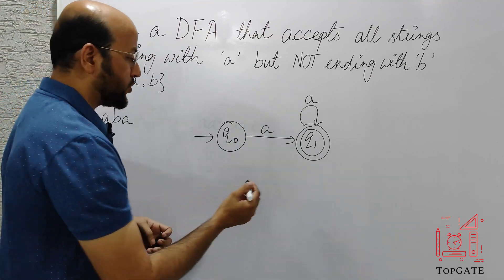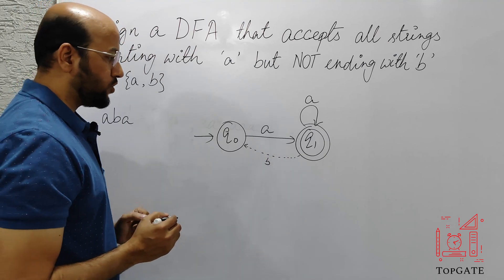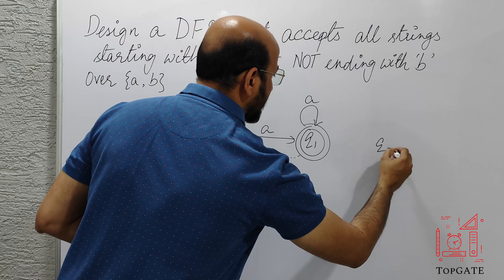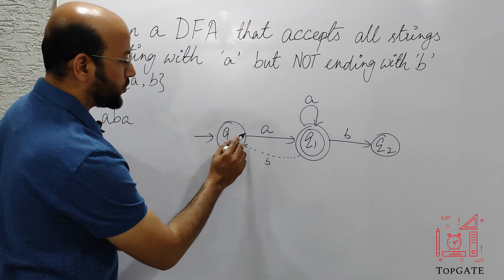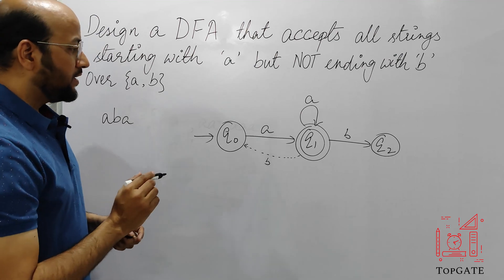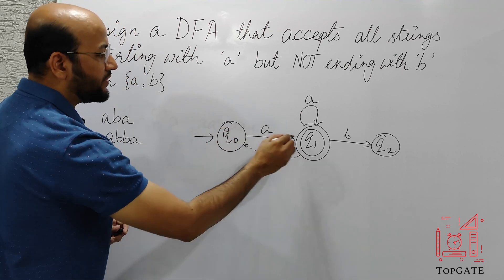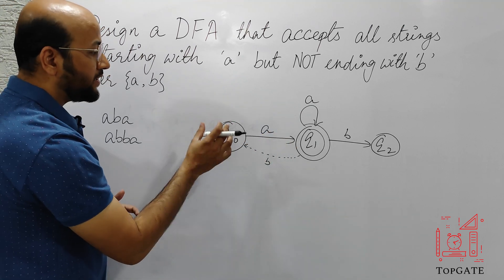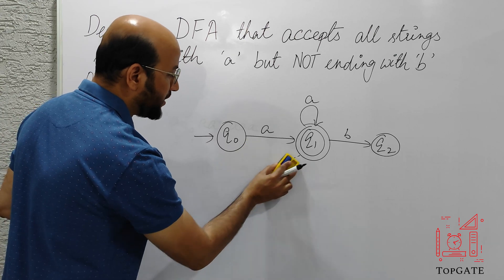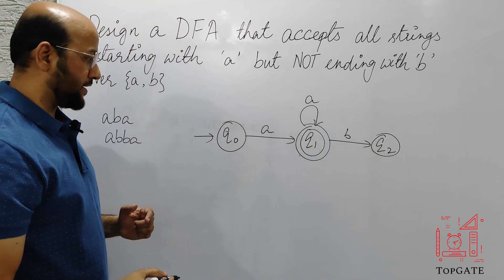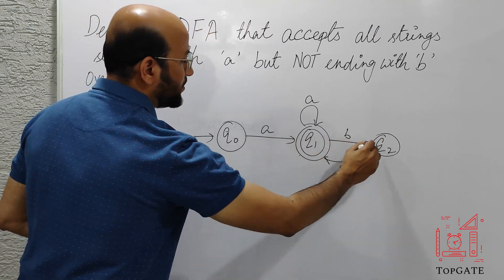So what options do we have? The first option is we can add a transition of B from Q1 back to Q0, or we can take one more state Q2 and add a transition of B to Q2. If we add the B-transition back to Q0 and then add a self-loop there, that would start to generate all the strings that start with B also — so we cannot do that. Hence we'll add a new state Q2 with a B-transition from Q1. For ABA: we have A, then B to Q2, and then we can add a transition of A from Q2 back to Q1. So it is now generating ABA.